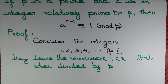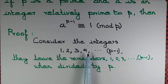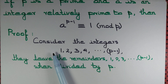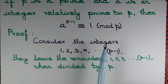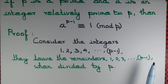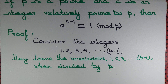We start the proof by considering the integers 1, 2, 3, ..., p minus 1. So we are considering exactly p minus 1 integers. They are all relatively prime to p, and they leave remainders 1, 2, 3, ..., p minus 1 when divided by p.